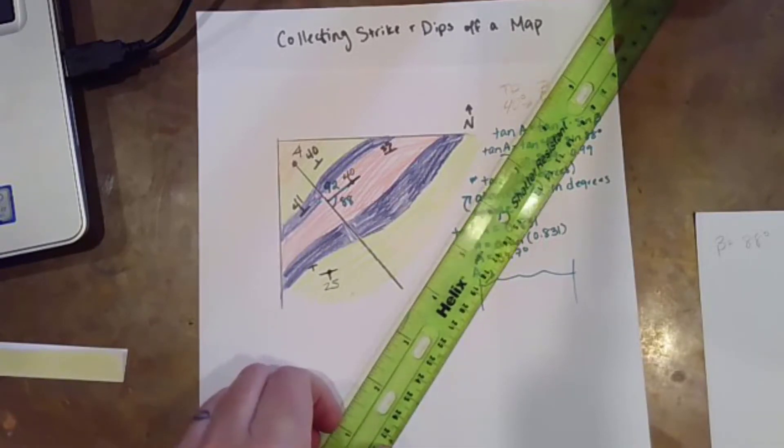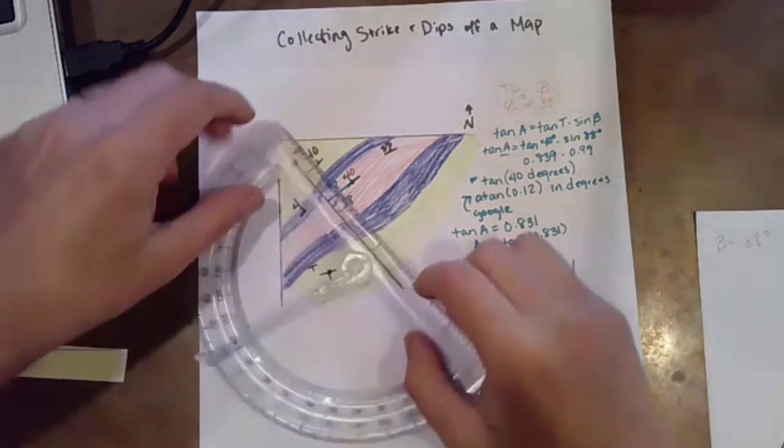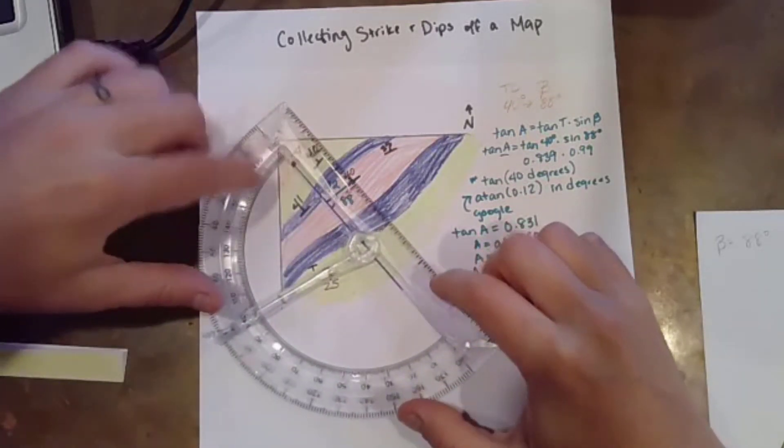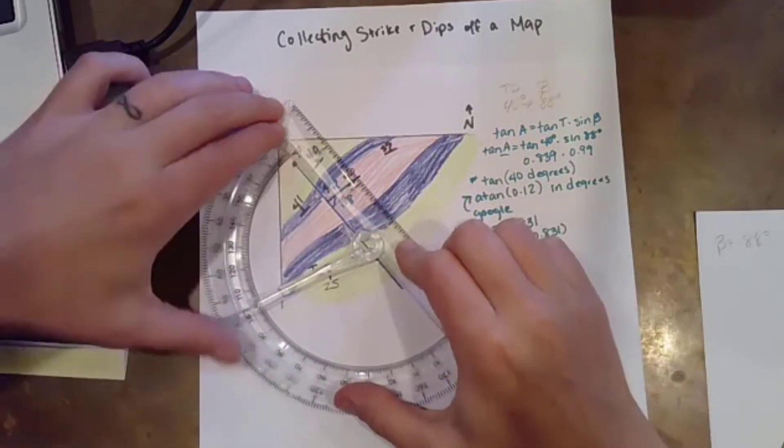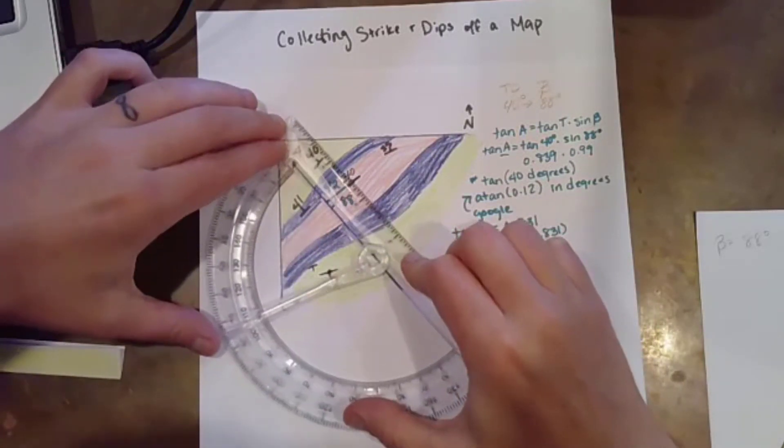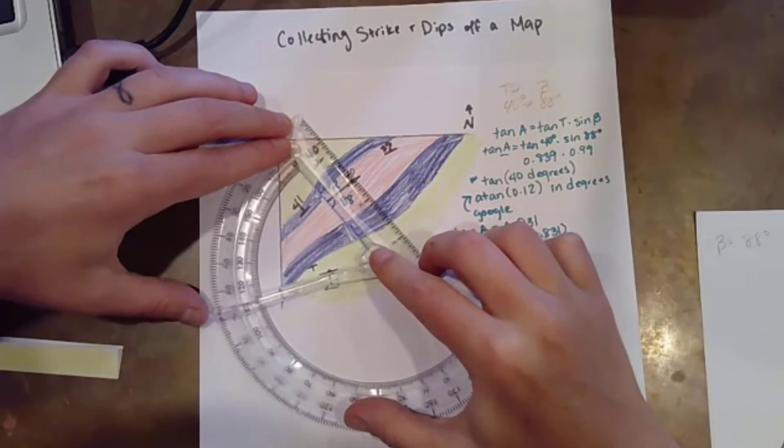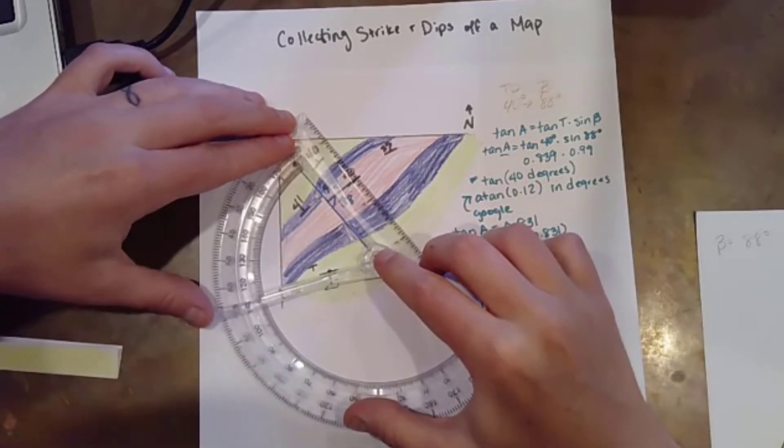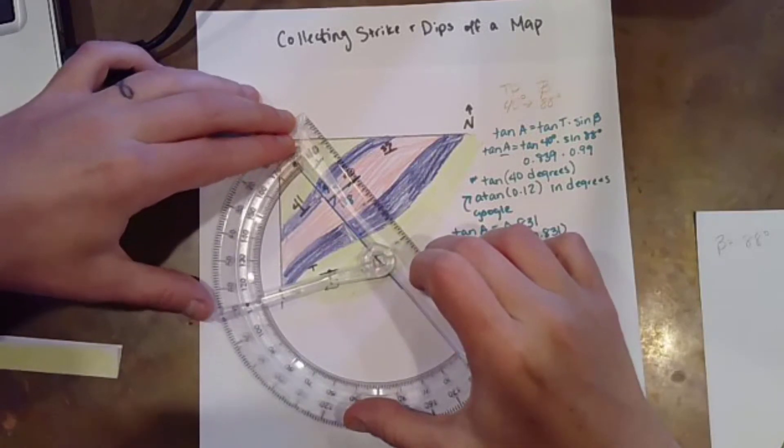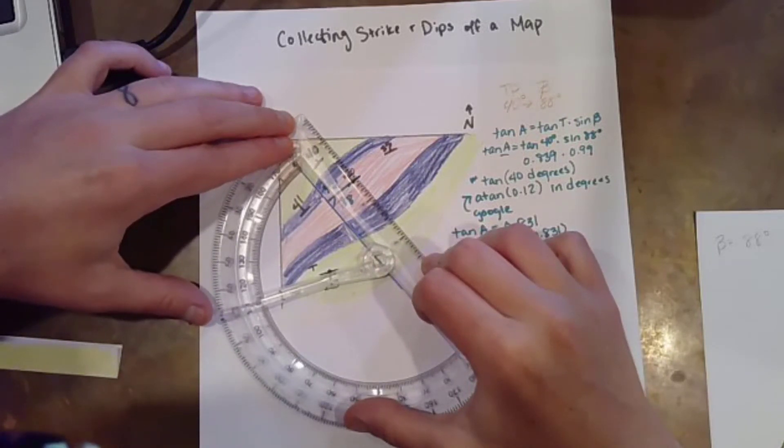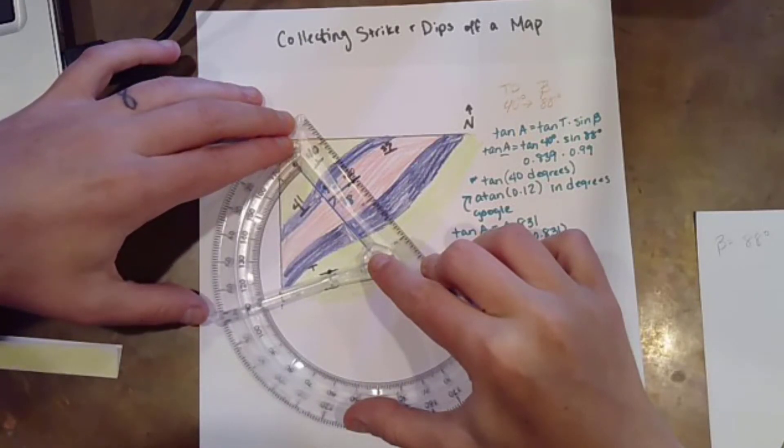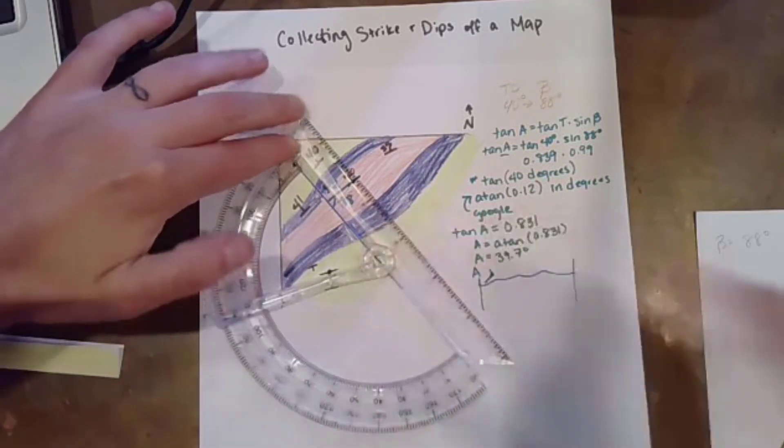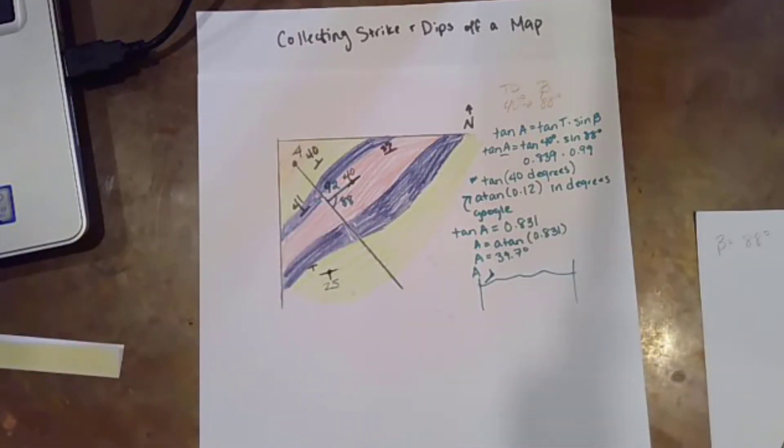All right, let's go ahead and measure our beta value for the 25. So again, I'm going to take this part of my protractor and put it along the line. And I'm going to maneuver this until my arm of my protractor is aligned with the strike of the measurement symbol. All right, I get 65 degrees is my acute angle right there.